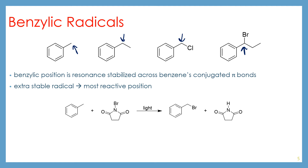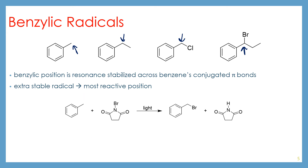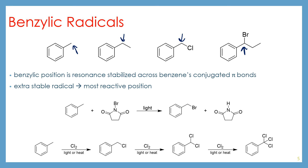So if you react toluene, which is this compound here, with N-bromosuccinimide, you're going to end up brominating in the benzylic position. If you react toluene with chlorine in the presence of light or heat, you're going to end up doing multiple additions to the benzylic position, and that reaction is going to happen very quickly and easily — very difficult to slow down and control.